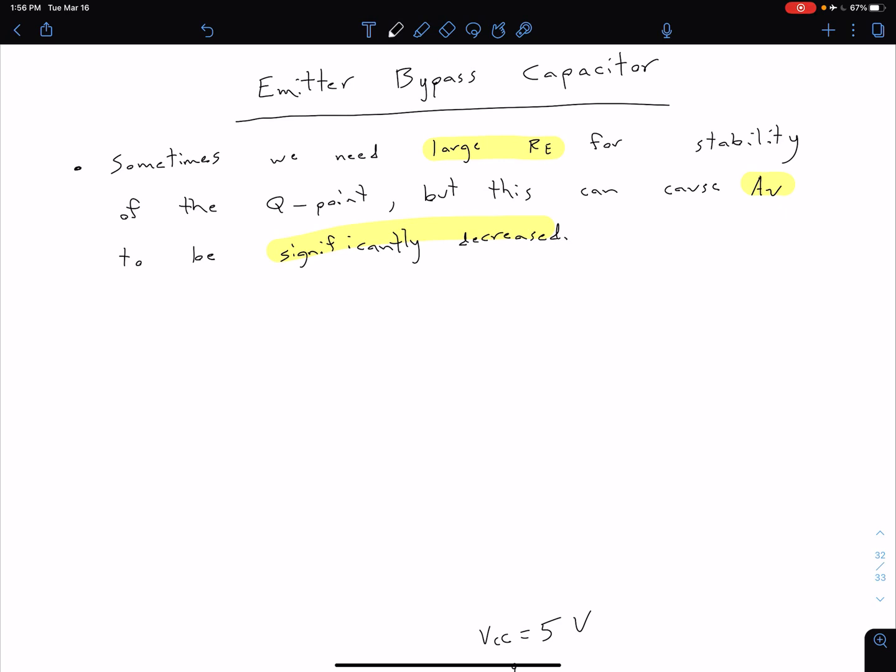One solution to this, if we do need a really large RE, is that we can use something called a bypass capacitor to bypass part or all of RE. Our solution to this issue stated above is that we can use a bypass capacitor.